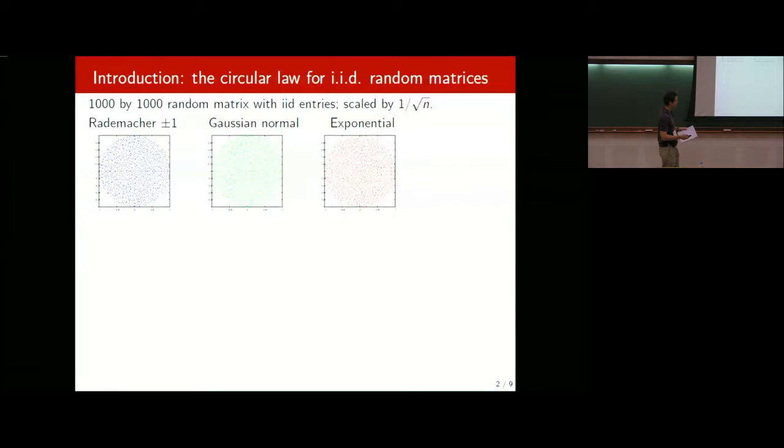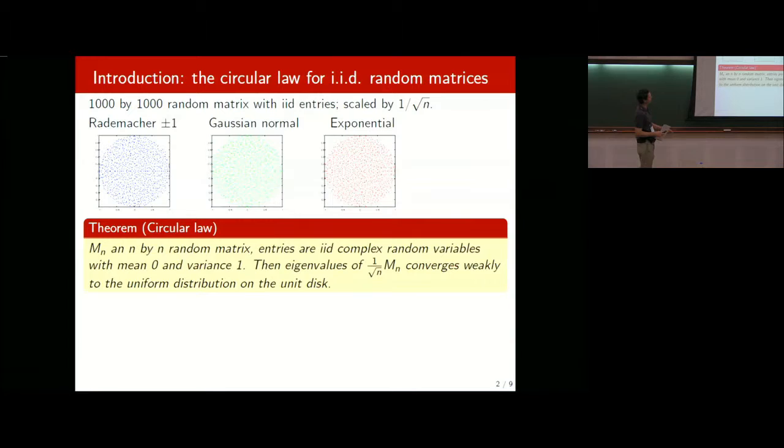The next in green is Gaussian normal — real Gaussian normal, because it's symmetric across the x-axis. Last is an exponential, a non-negative random variable with mean one and variance one. You look at these three things and think there's a pattern: they all spread out very nicely and uniformly on the disk. And that is indeed a theorem — the circular law.